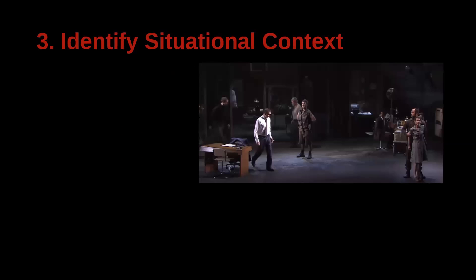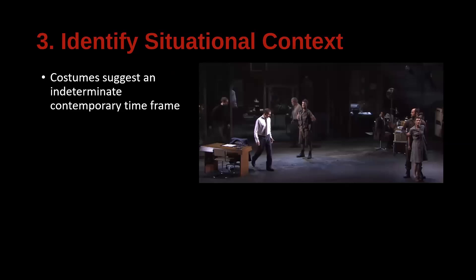Here's a still from the play. We can use even just the visual hints here to help us identify that situational context. For example, the costume suggests a more contemporary than classical Greece time frame — you've got a man in a white shirt and a tie, a figure in military-type uniform, another man in a suit, and a woman in a dress. So we can tell from this that it's a much more contemporary time frame than the original play.